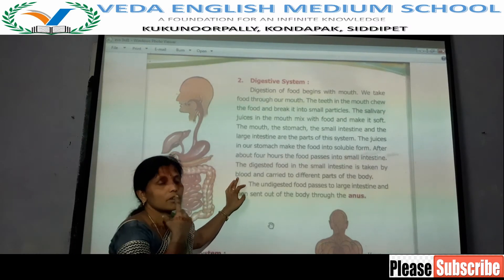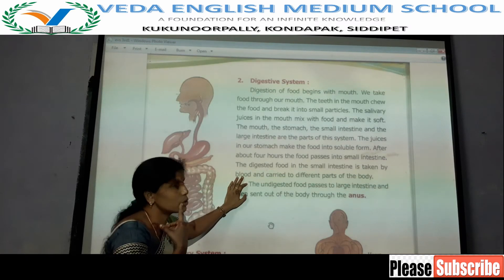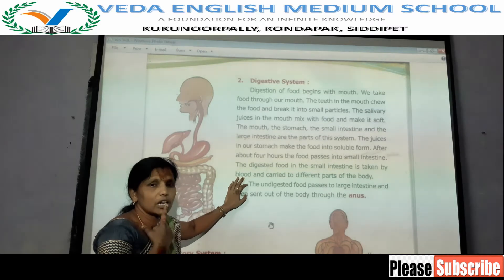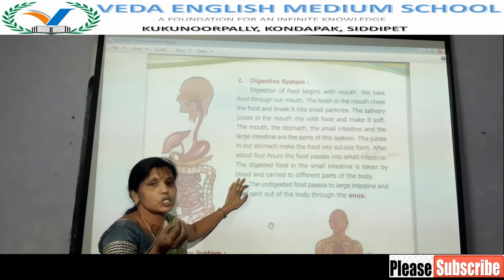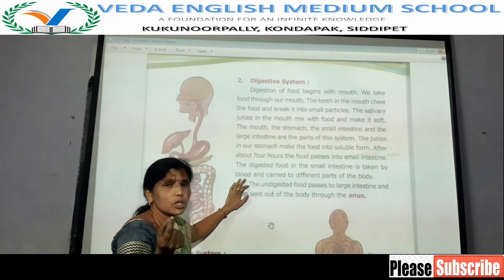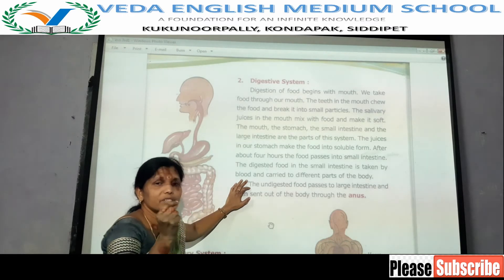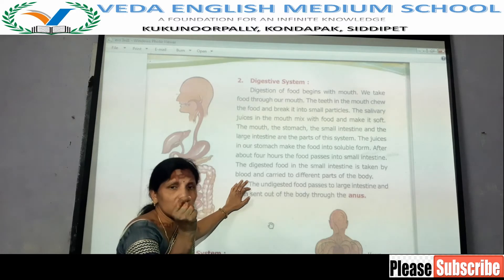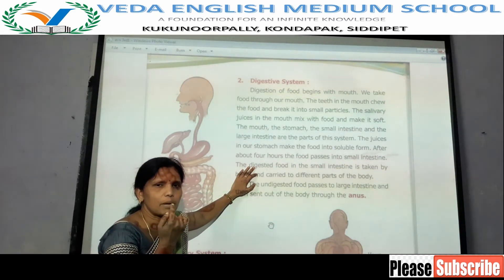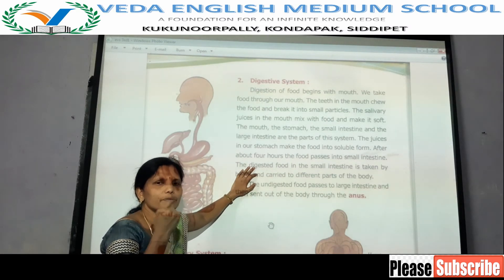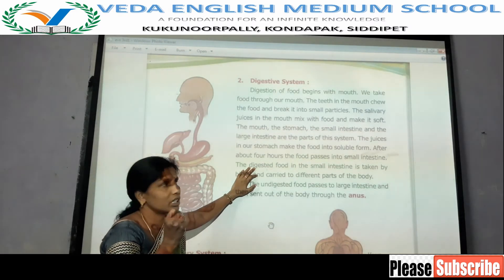We take food through our mouth and chew it with the help of our teeth. By chewing, we break complex food particles into small pieces. Salivary glands present in the mouth release salivary juices — saliva — into the mouth. While chewing, the saliva mixes with the food and makes it soft.